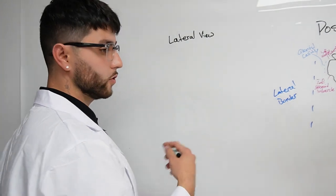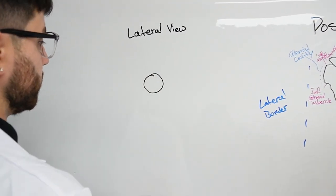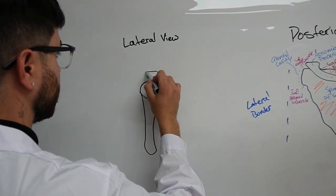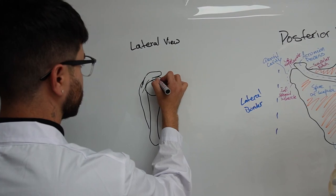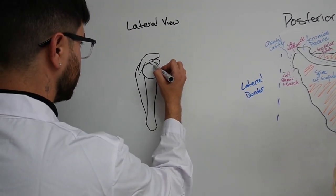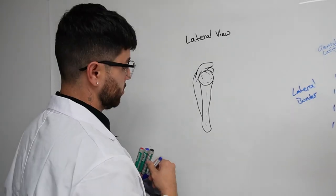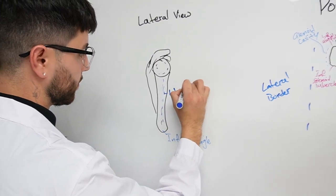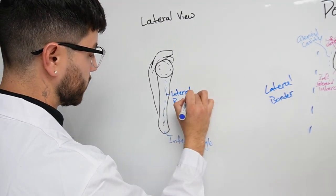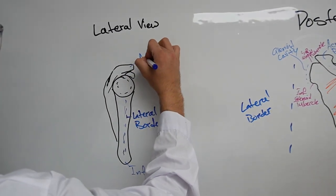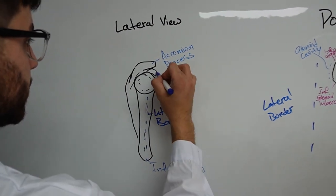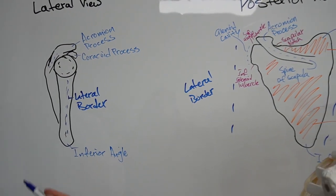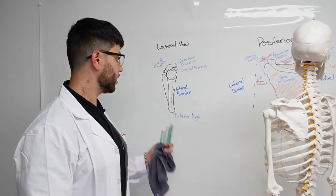I'm going to start off by drawing a circle to resemble our glenoid cavity. Then you've got the lateral view with the acromion process and the coracoid process. You've got the inferior angle and the lateral border. The spine of the scapula is a very minor detail, but you see it more on the posterior view. So that's a very general format of the lateral view of the scapula.